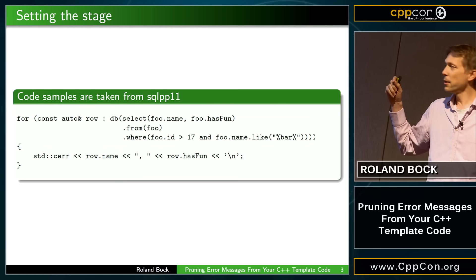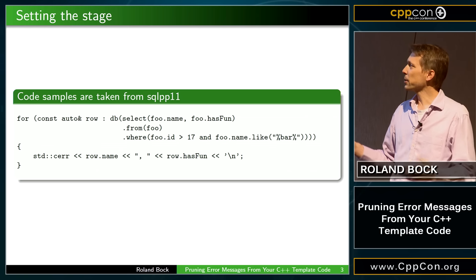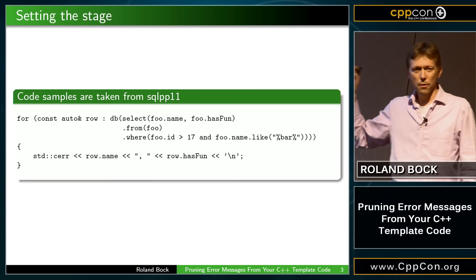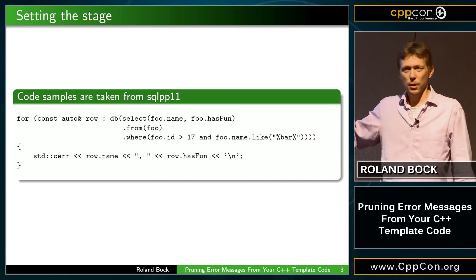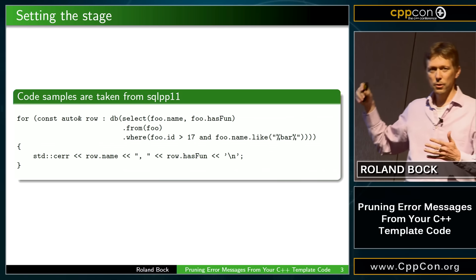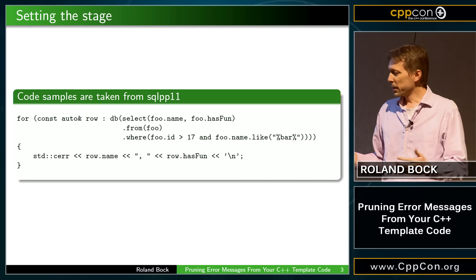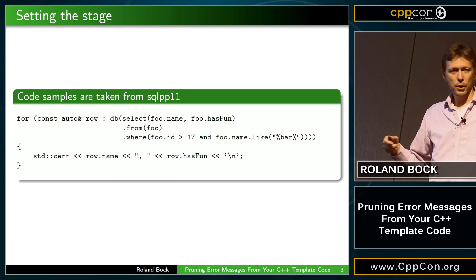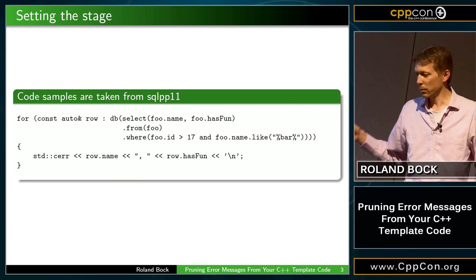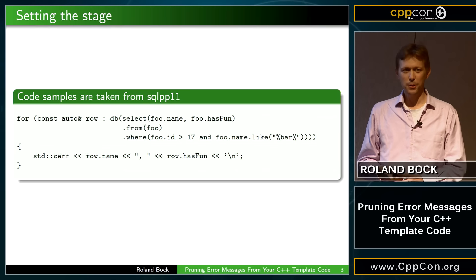You loop over the results, and the result rows have aptly named members with reasonable types. So you can have the full C++ compiler machinery tell you when you're doing something wrong. This library will tell you at compile time whether you're forgetting a table in the FROM, or comparing incompatible columns, or mixing aggregate and non-aggregate functions — the compiler can tell you all about that at compile time.